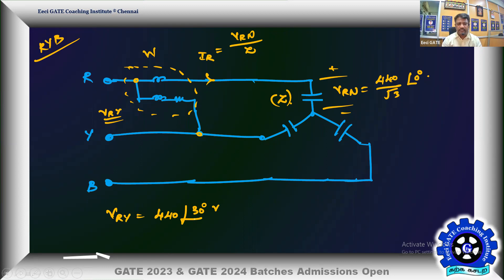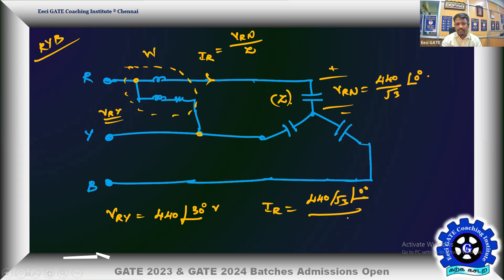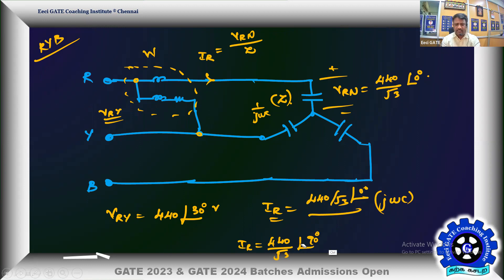Now calculating I_R: it equals V_RN divided by the impedance. Since the impedance is 1/(jωC), dividing gives I_R = (440/√3) × jωC. Because of the j in the numerator, the current leads by 90 degrees, so I_R = (440/√3) × ωC at an angle 90 degrees. That is the current through the current coil.